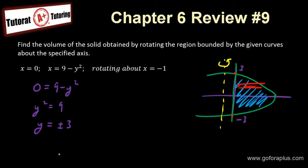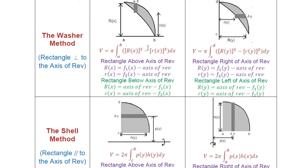So the volume function is equal to pi times the integral from minus 3 to 3. It's pi times R squared — big R squared minus small r squared. The radius is the function subtract the axis of revolution. Because the axis of revolution is on the left side, my rectangle is on the right side of the axis, so I take my function and subtract the axis of revolution.